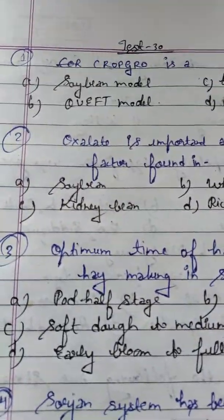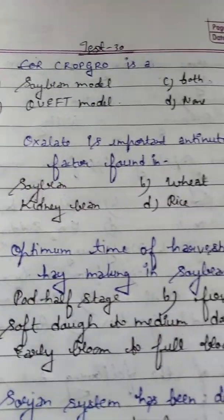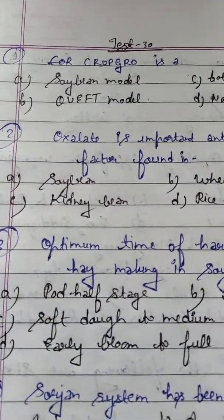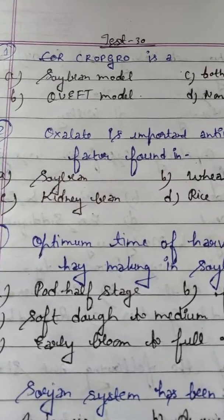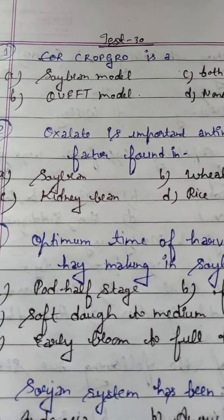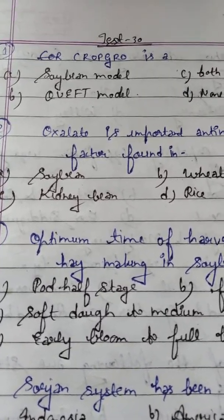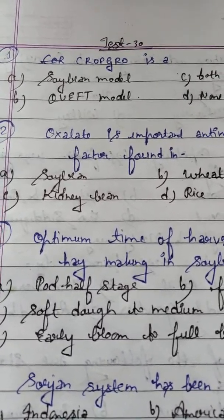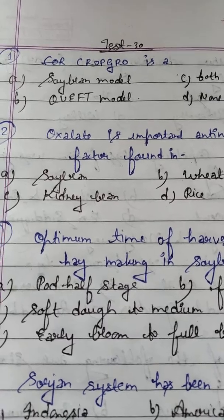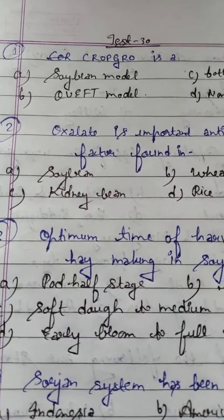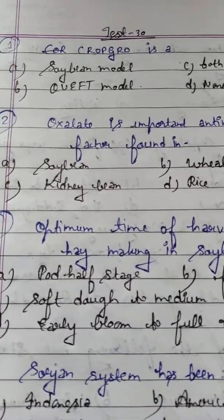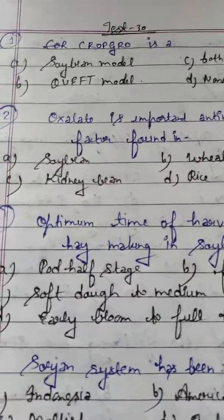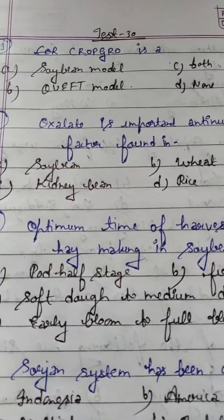Student, the first question is: CROPGRO is a remote sensing model used in which of the following crops? Option A: Soybean model. Option B: QUEFTS model. Option C: Both. Option D: None.